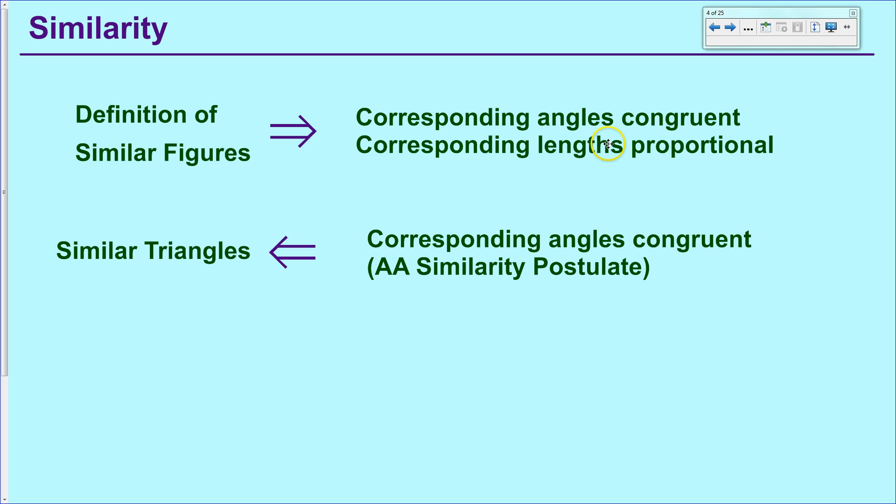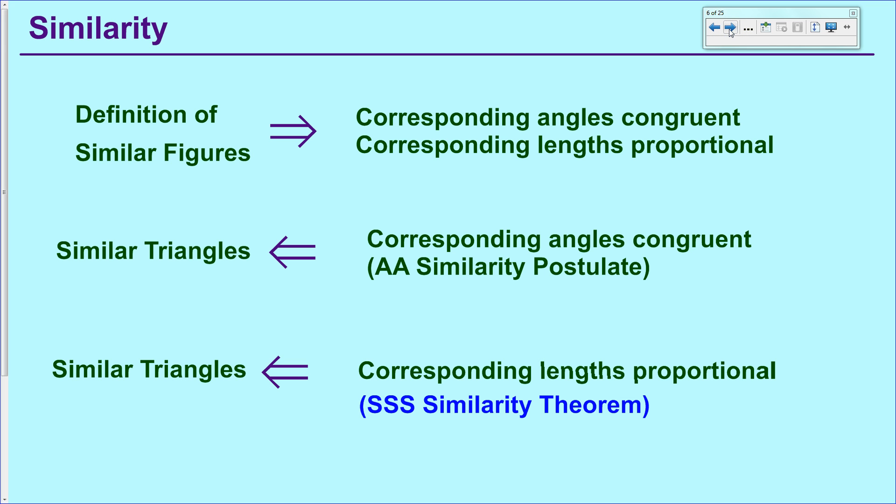Now what we're going to do today is start playing around this second statement, that all corresponding lengths are proportional. And like I said, you've already done this. You've shown that all three sides of a triangle are proportional to each other, or proportional to the other triangle, and then you've said that they are similar triangles. Well, now we're just going to have a theorem that backs that up, and it's going to be called the SSS similarity theorem.